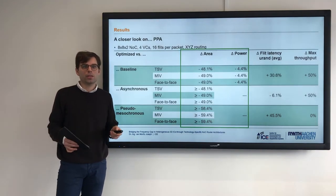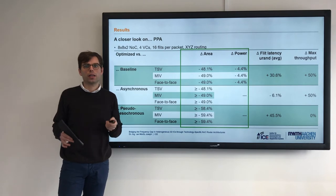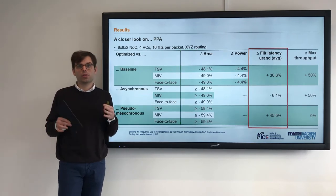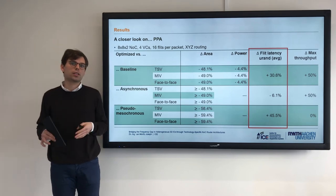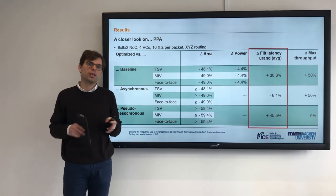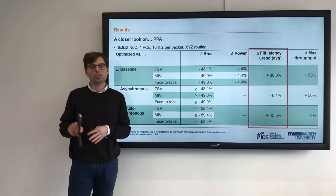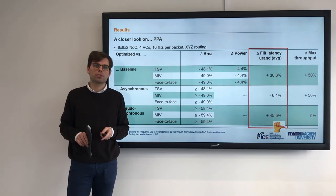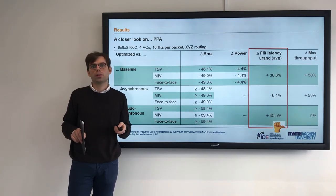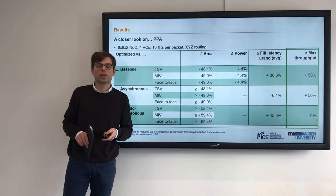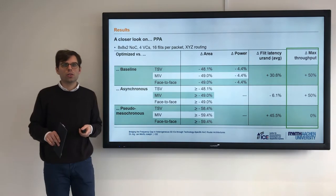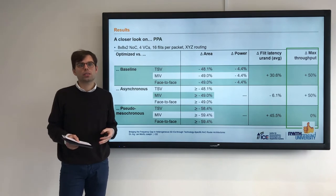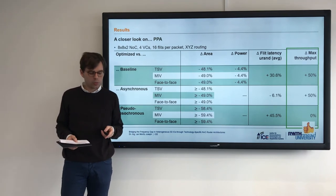To sum up: in terms of area and power, our design is better. In terms of average flit latency, the story is not entirely clear — depending on which architecture you compare against, you either have a positive or negative impact on performance. We need a more in-depth analysis. In terms of maximum throughput, we improve in all cases except one where we are the same.